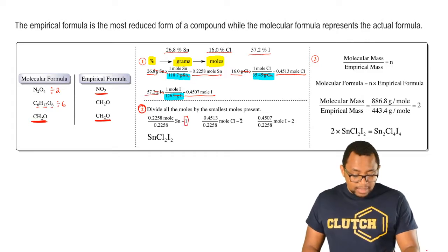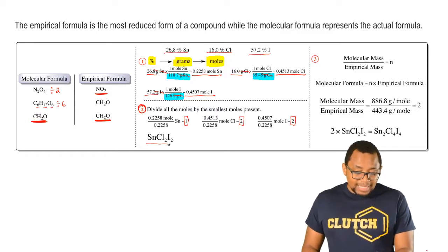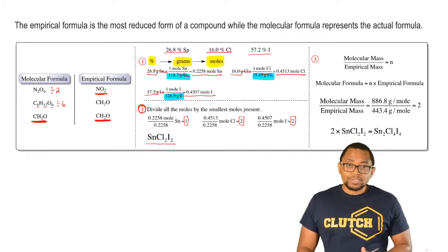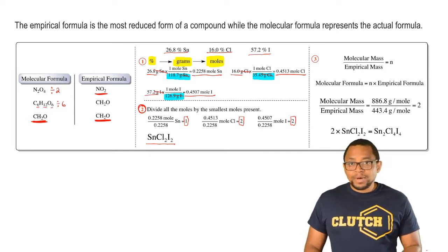This gives us the atomic ratio of each element within that compound. Here our empirical formula would be SnCl2I2. These are the typical steps you take to solve any empirical formula question.